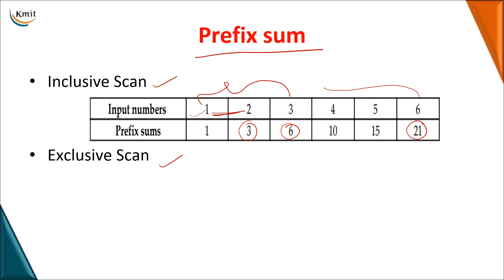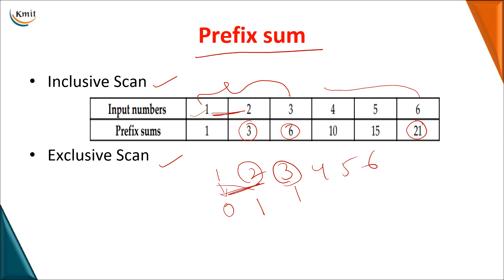In inclusive scan, you include the starting element when performing the summation. Whereas in exclusive scan, you exclude the first element, so performing the summation would give 0 for the first position. The next summation would be 1, not including the element at the current position. So: 0, 1, 3, 6, 10, 15 — nowhere are you including the element at the current location. In inclusive scan, the element at that location and all previous elements are summed up.